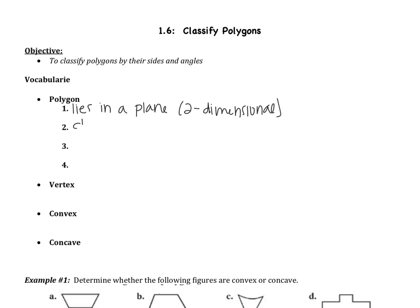Second thing is a polygon is closed. There's no openings. Next, the sides are formed by line segments. So more simply than that, all I'm telling you is that there's no curves. So a polygon has no curves. A circle is not a polygon because it's curved.